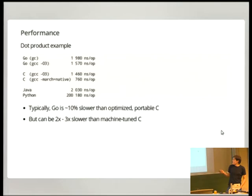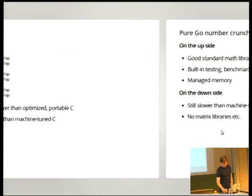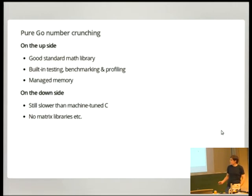However, it can still be several times slower than really machine-tuned C code — that's a trade-off you make. So number crunching in pure Go is quite okay and there's a lot of built-in stuff. The managed memory really cannot be overstated, but you'll have to get your really high performance libraries from elsewhere.